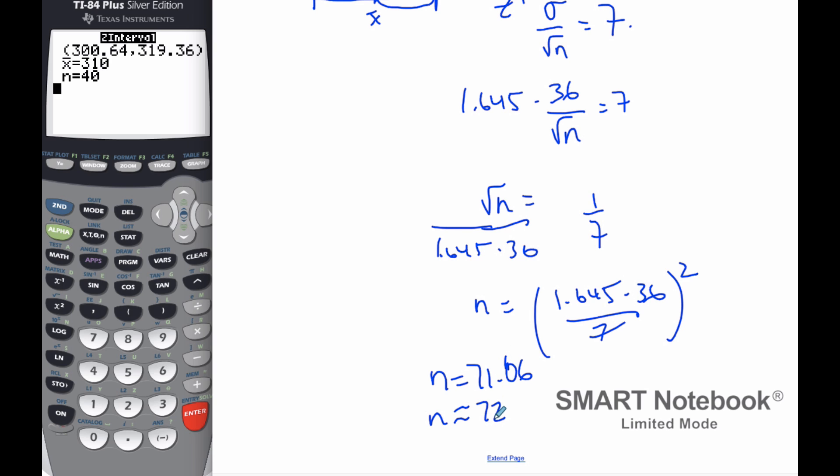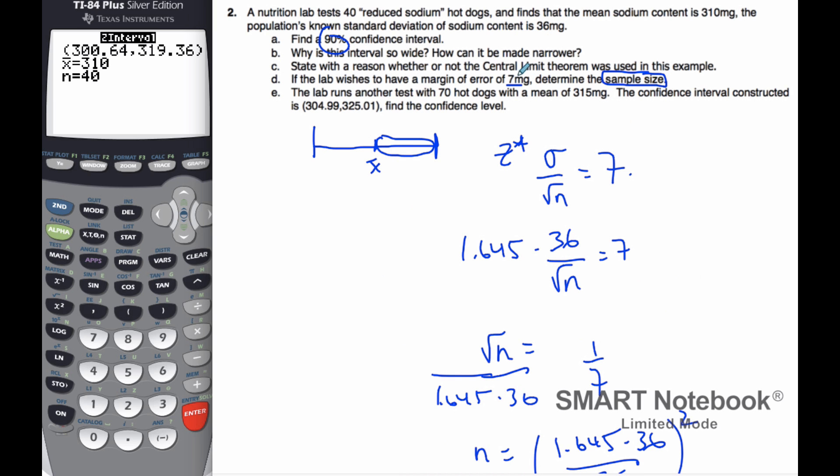Either way, I round up, no matter what this number is. And so if I make n 72, my sample 72, then I know my margin of error will be 7 milligrams.